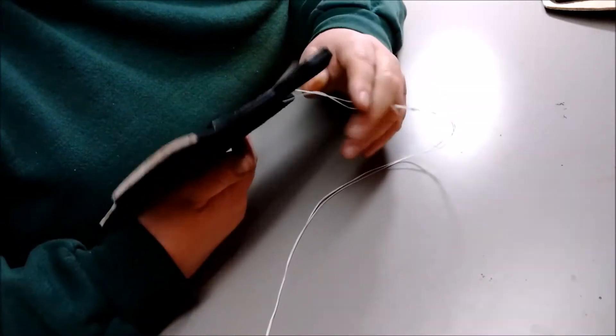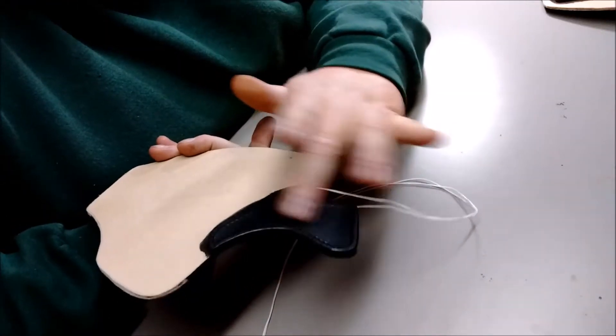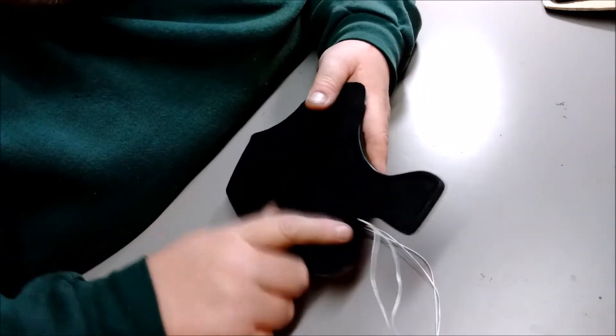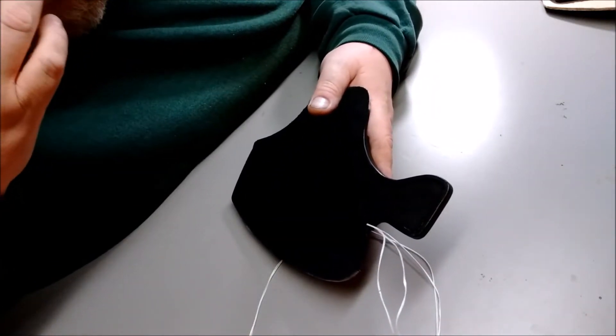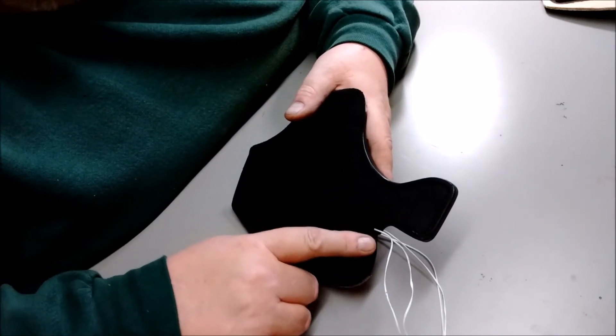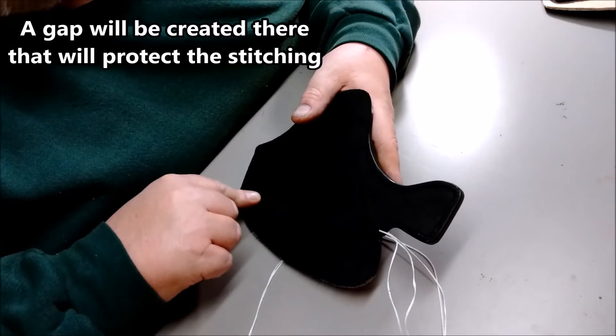All right, I'm about to start stitching the reinforcements onto Flint and Steel's holster. I want to pick a spot that's going to get the least amount of stress to end. So I want to end over in this corner because my front sight will go down this part of the holster.